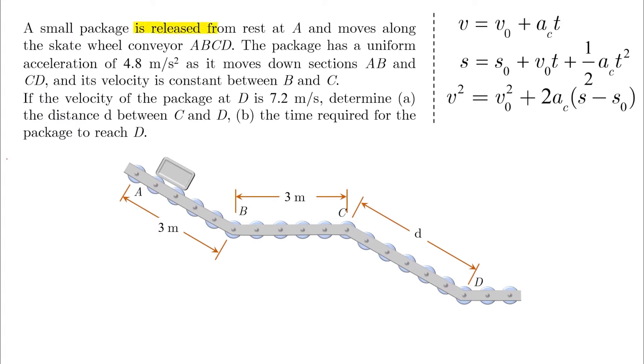A small package is released from rest at A and moves along the conveyor ABCD. The package has a uniform acceleration of 4.8 meters per second square as it moves down sections AB and CD, and its velocity is constant between B and C.